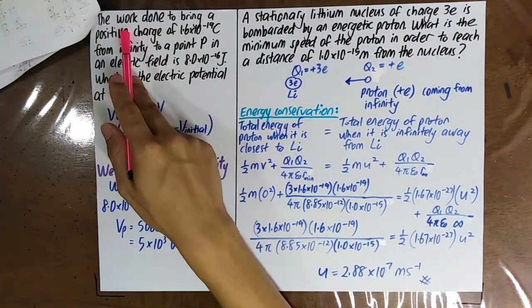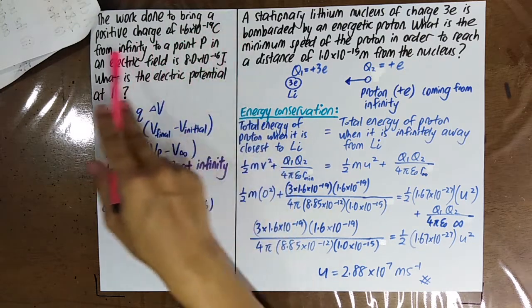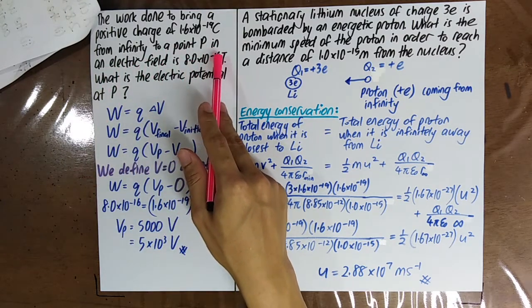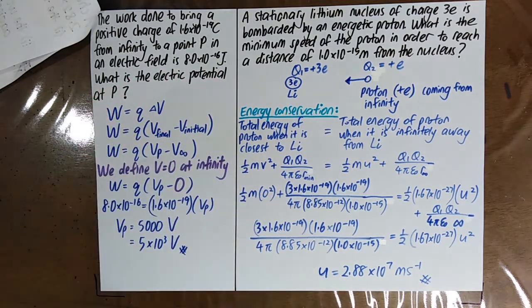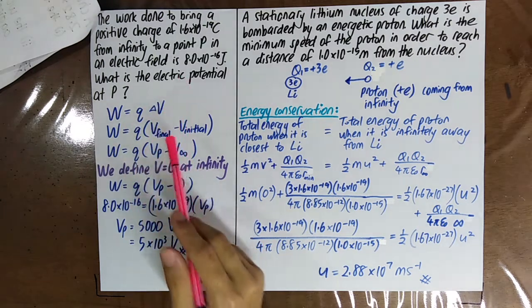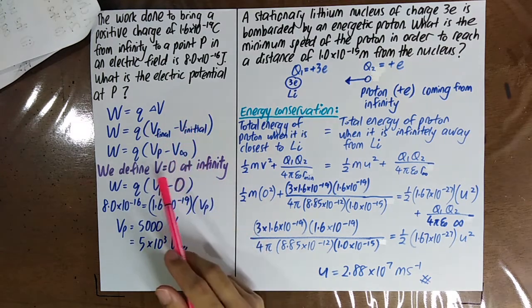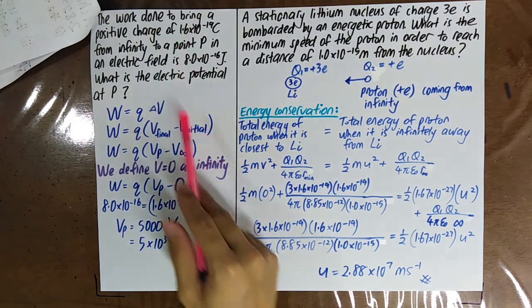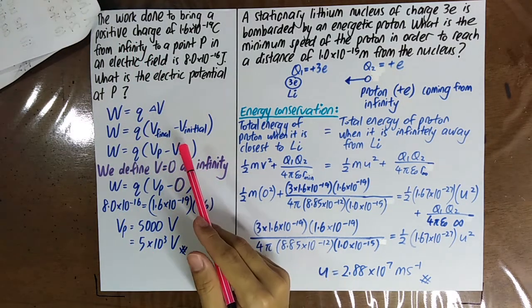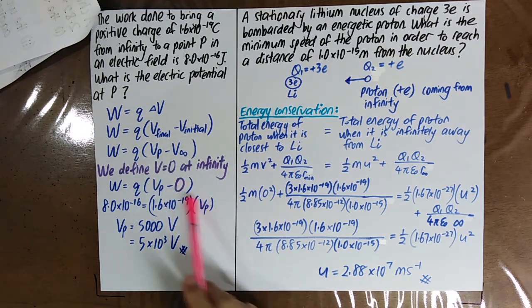The work done to bring a positive charge of 1.6×10⁻¹⁹ C from infinity to a point p in an electric field is 8×10⁻¹⁶ J. What is the electric potential at point p? Work done equals q times ΔV, where ΔV is the final potential minus the initial potential. Since the initial position is at infinity, and by convention V at infinity equals zero, you can solve for the electric potential at point p.